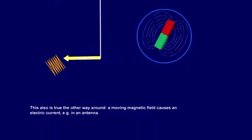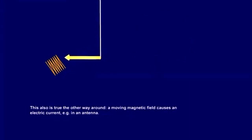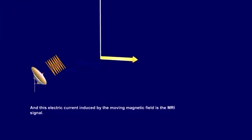This also is true the other way round. A moving magnetic field causes an electric current, for example, in an antenna. And this electric current, induced by the moving magnetic field, is the MRI signal.